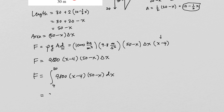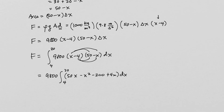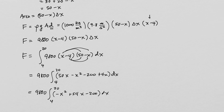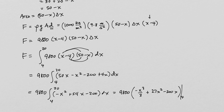Expanding (x − 4)(50 − x): we get 50x − x² − 200 + 4x = −x² + 54x − 200. So the integral is 9,800 times the integral from 4 to 20 of (−x² + 54x − 200) dx. Integrating gives −x³/3 + 27x² − 200x, evaluated from 4 to 20.